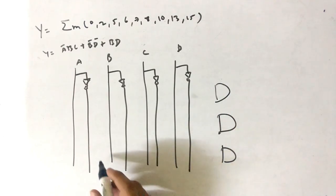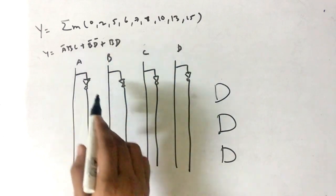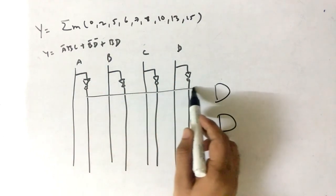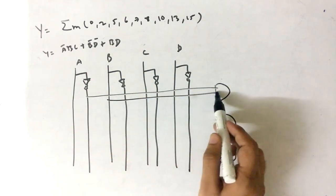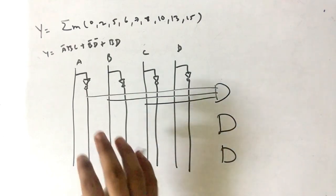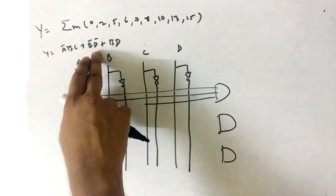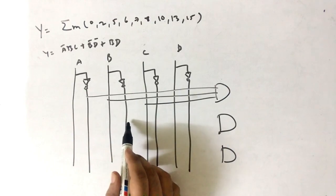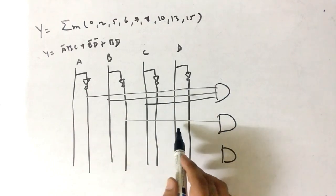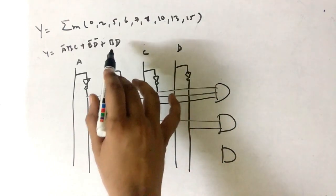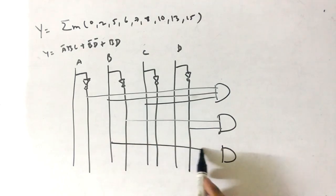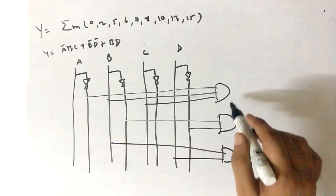Three AND gates. First is a bar b c, so the inputs are a bar, then we have b, then we have c. For the second gate we have b bar d bar, so b bar is here then d bar is here. Then we have b d, so b is here, d is here.